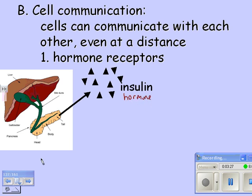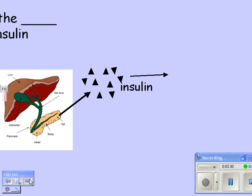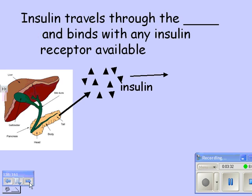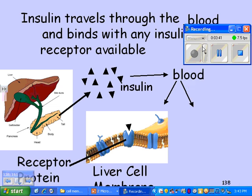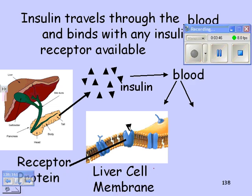Insulin goes out into your bloodstream. It travels through the blood, like every hormone, and binds with any insulin receptor available. Here's a liver cell membrane with a receptor. Insulin actually affects the liver — it says, 'Hey liver, take in some glucose and change it into glycogen. Store it for a while.' That will get the glucose out of the blood. See how the insulin fits right with that receptor?